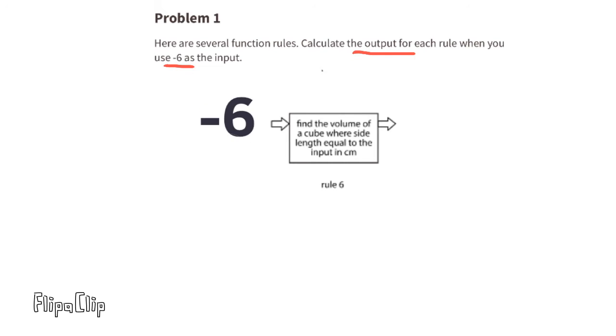The input is negative 6. The function is find the volume of a cube where the side length is equal to the input in centimeters. That's an error because a side length can't be a negative number.